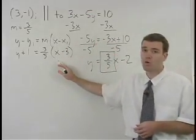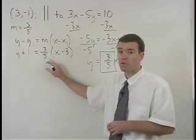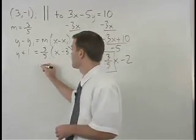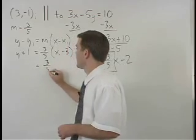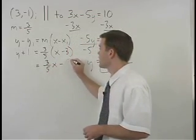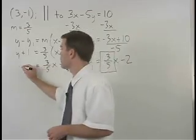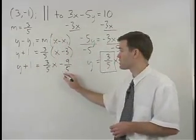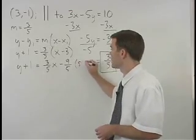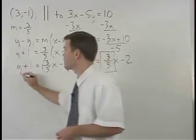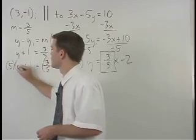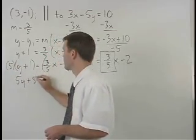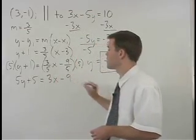To convert this equation to standard form, we then distribute this 3 fifths through the parentheses to get 3 fifths x minus 9 fifths, bring down our y plus 1. Now we need to get rid of the fractions, so we multiply both sides of the equation by 5, that gives us 5y plus 5 equals 3x minus 9.